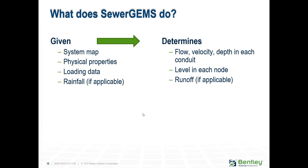What does SewerCAD or SewerGEMS do? You give it information and it calculates flows, velocities, depth, and hydraulic grade lines. What do you need to input? A map of your system — where everything is located — along with physical properties like diameters, materials, and invert elevations. Very importantly, the loading: how much flow you estimate entering the system at each point. For rainfall simulation, you also need rainfall data. Given that information, the software calculates everything else.